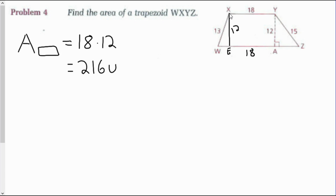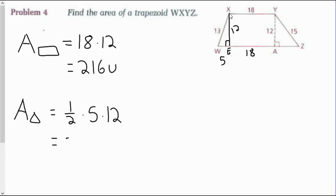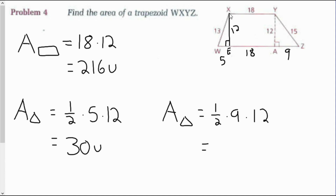For the area of right triangle WEX: the hypotenuse is 13, the height is 12, and length WE is 5 — a 5-12-13 Pythagorean triple. So the area of triangle WEX is one-half times 5 times 12, giving 30 square units. For triangle YAZ: hypotenuse is 15, altitude is 12, and length AZ is 9 (a 3-4-5 triple scaled to 9-12-15). Area of triangle YAZ equals one-half times 9 times 12, giving 54 square units.